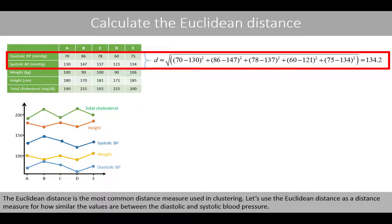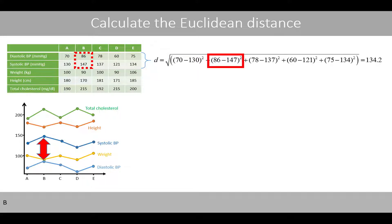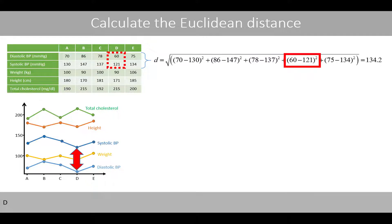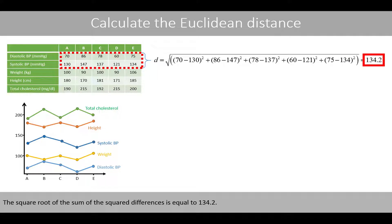The Euclidean distance is the most common distance measure used in clustering. Let's use the Euclidean distance to measure how similar the values are between the diastolic and systolic blood pressure. We therefore square the difference between these two variables for individuals A, B, C, D, and E. The square root of the sum of the squared differences is equal to 134.2.